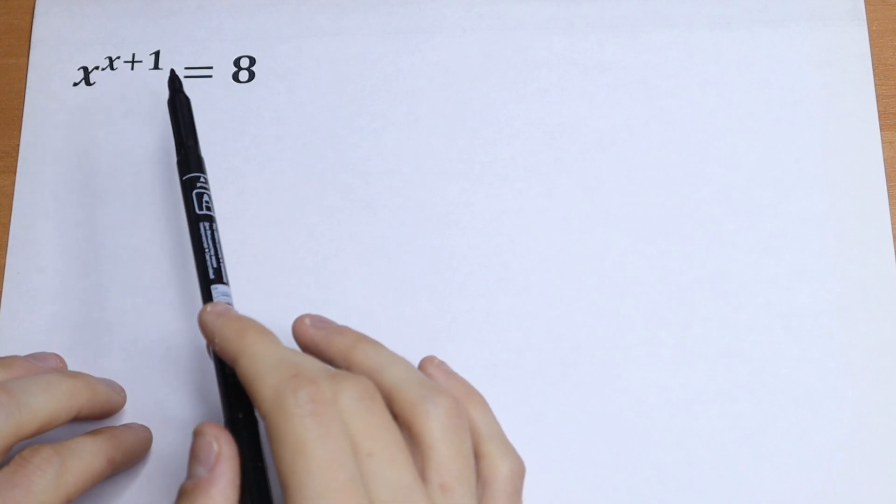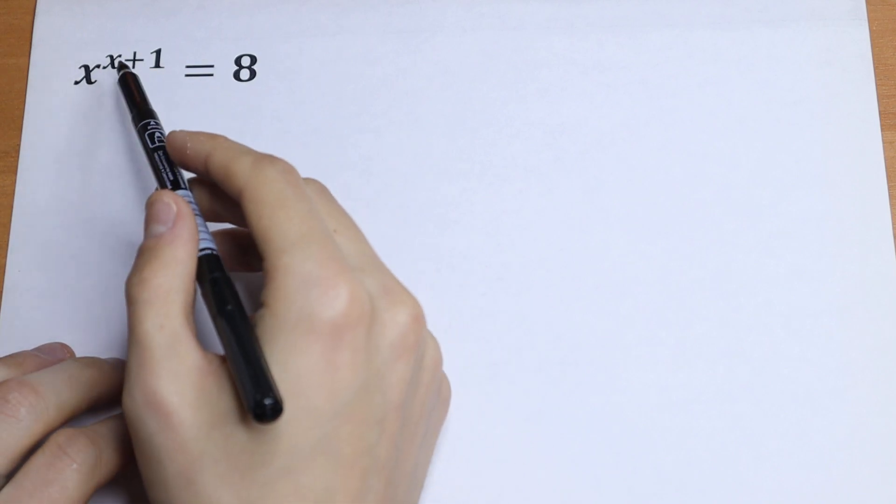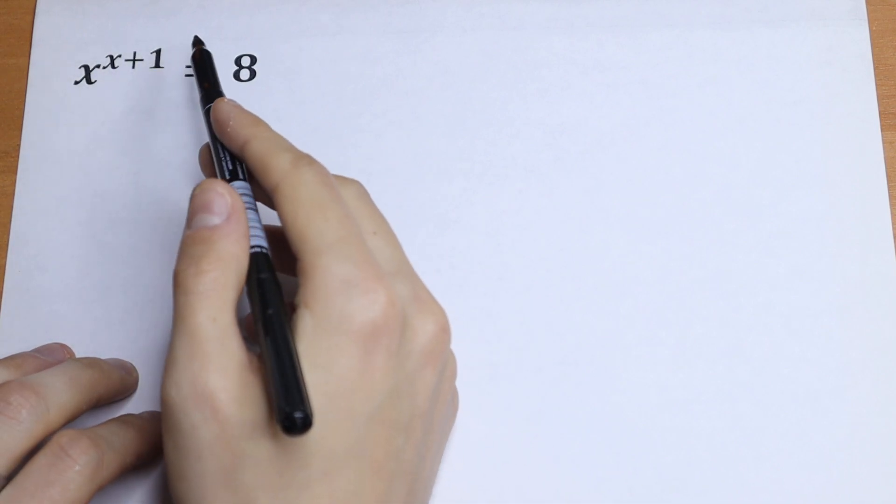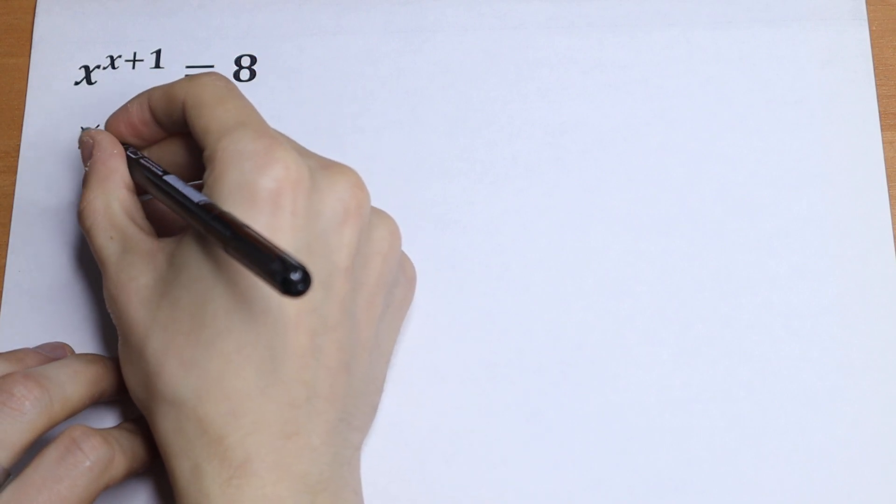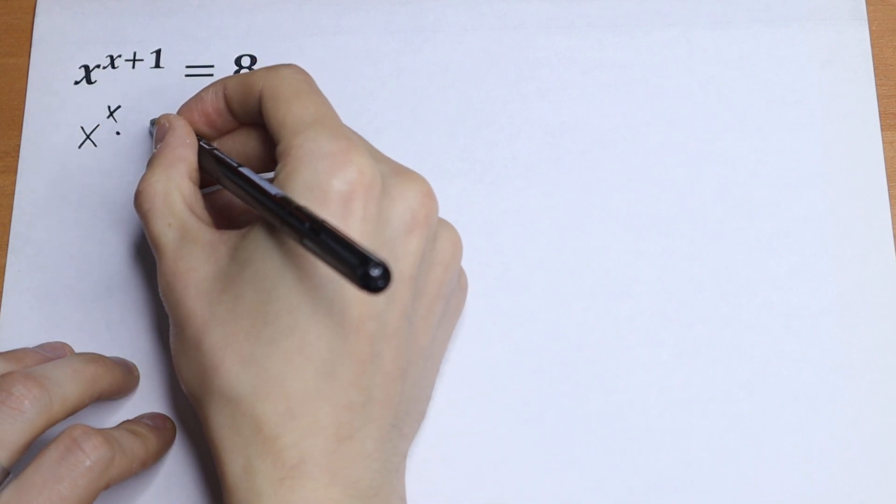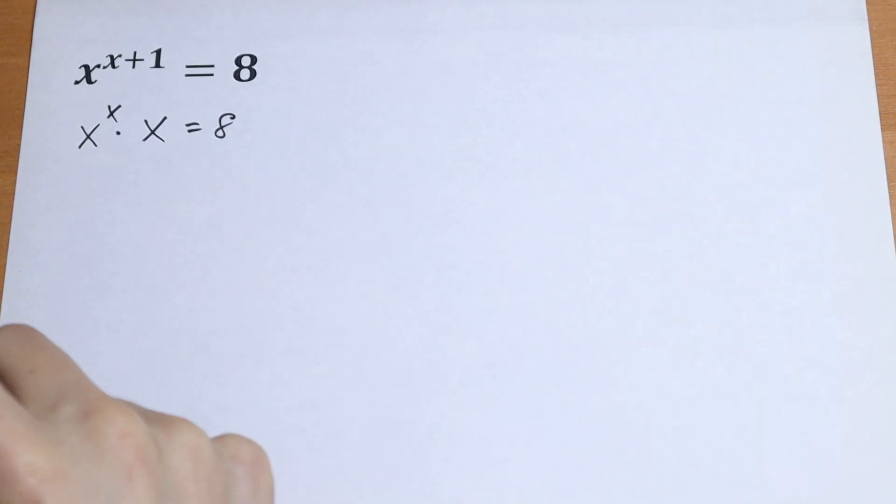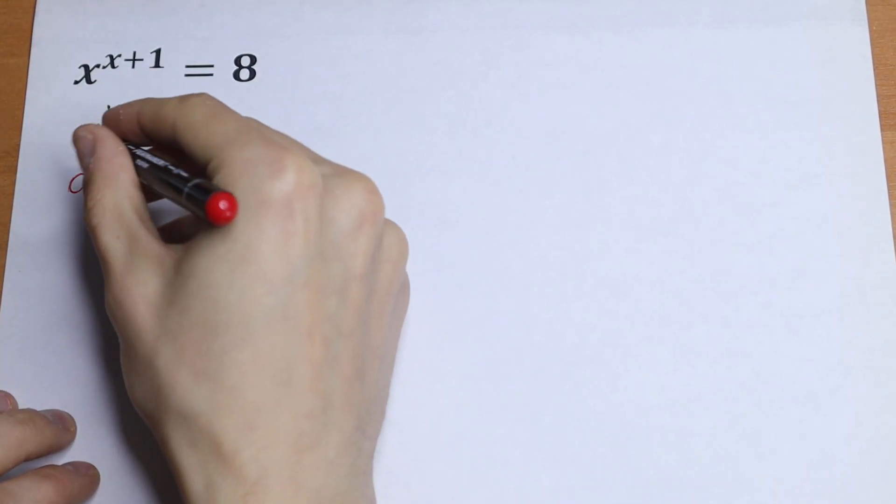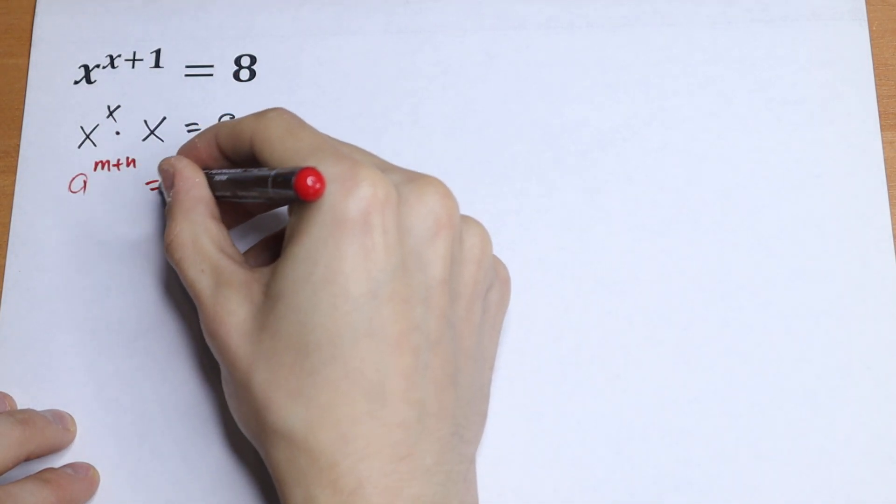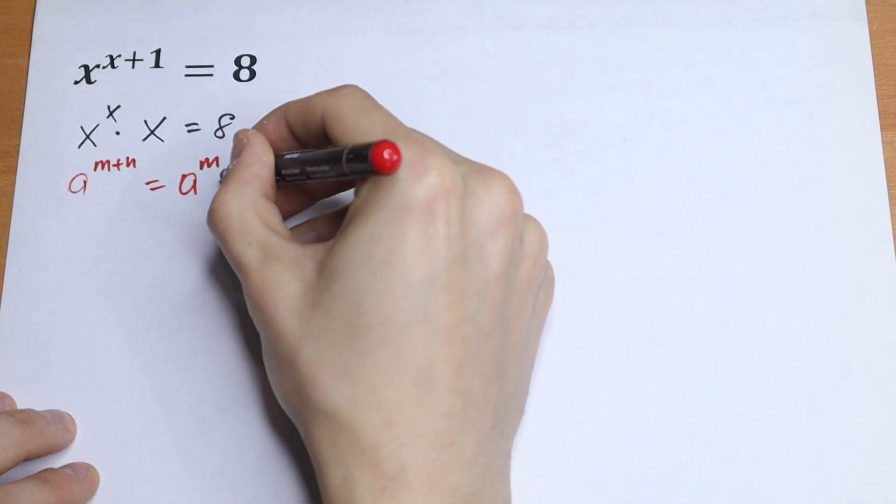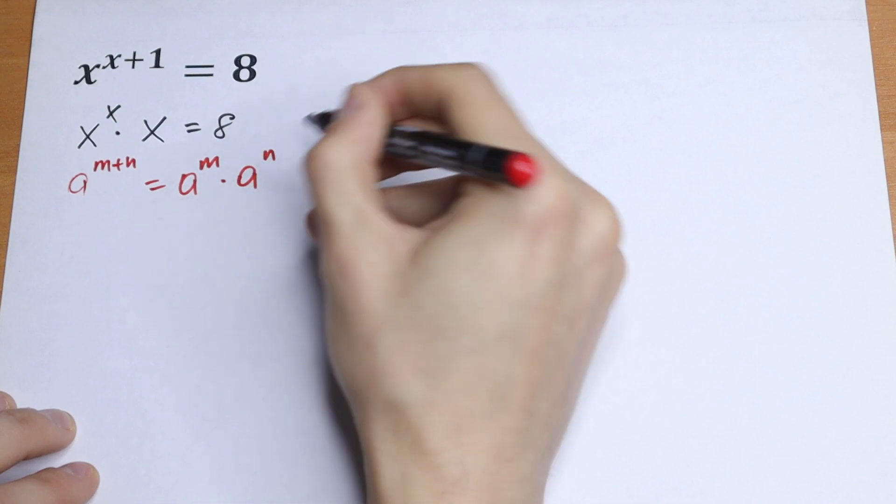First of all, we can simplify a little bit the left side. Let's break this exponent, this power: x to the power x times x equal to 8, using this rule. If we have a to the power m plus n, we can break this as a to the power m times a to the power n.